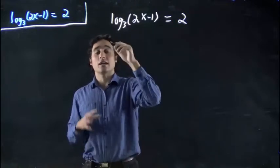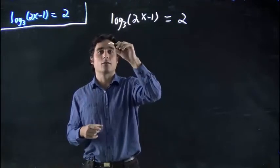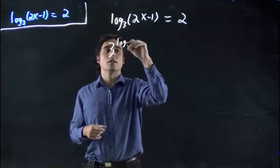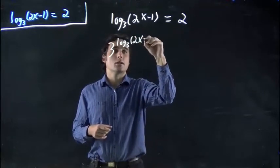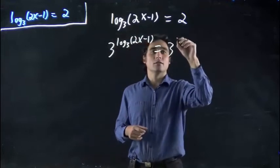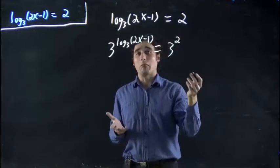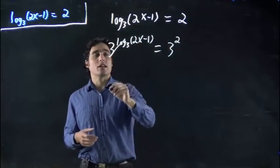So let's see what happens. 3 again as always both sides, so 3 to the power of log 3 of 2x minus 1, and this side is just 3 to the power of 2. Well remember these cancel, so we're left with 2x minus 1 on the left hand side.